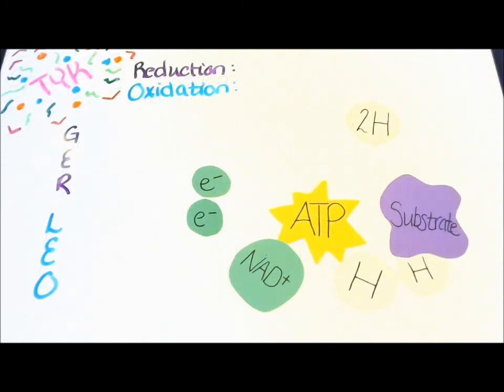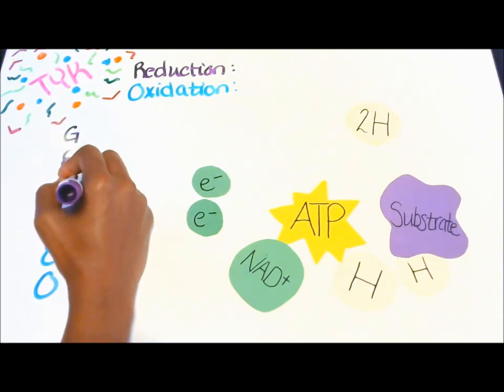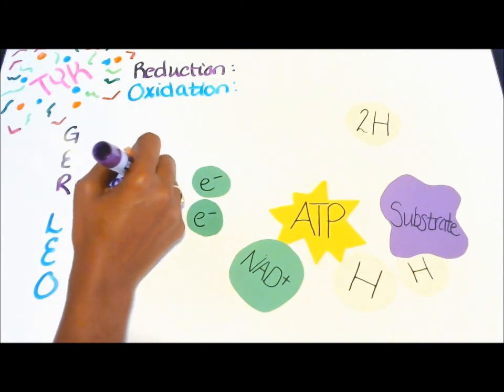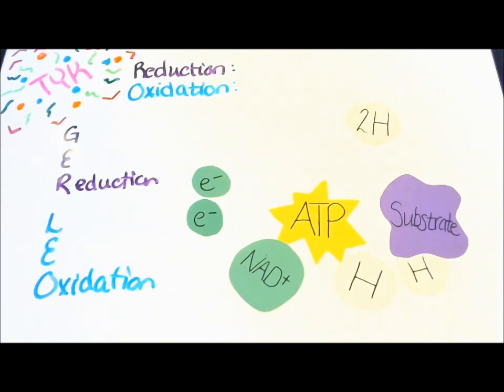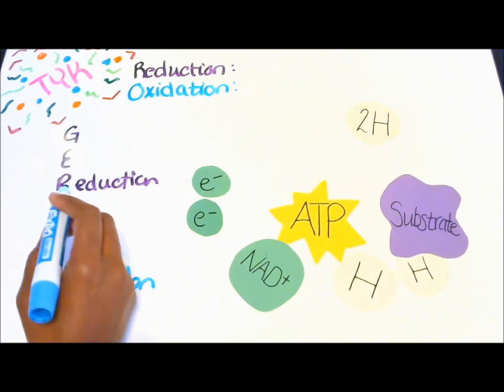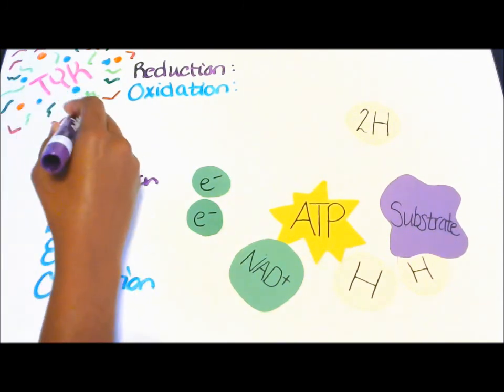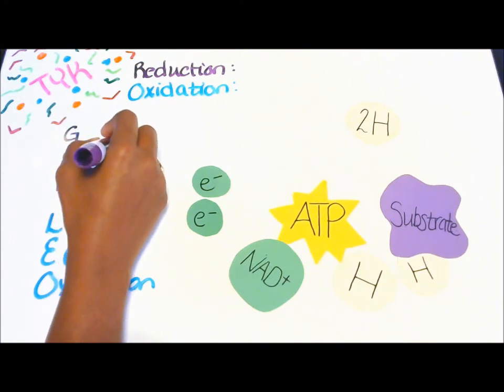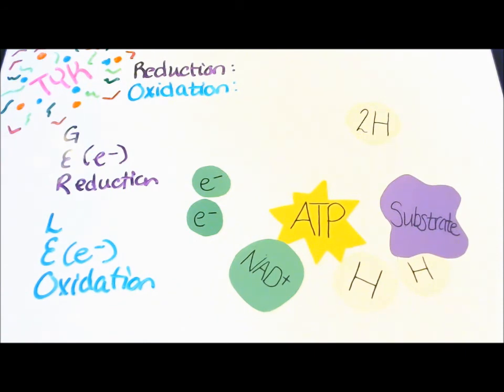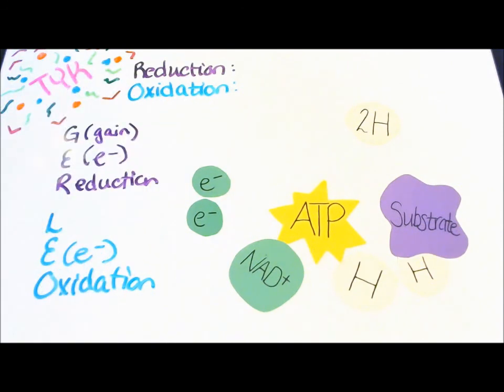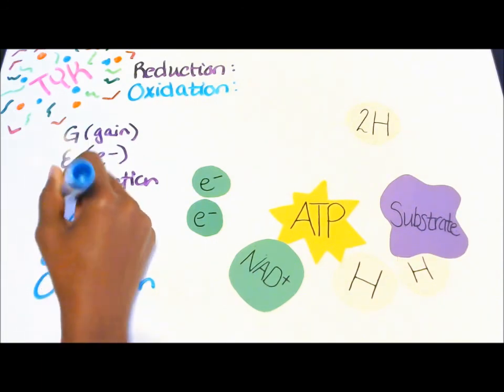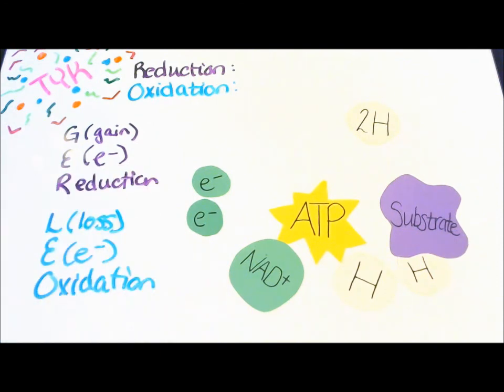Okay first things first, we're gonna start with GER, filling in the blanks. So we know of course this is reduction, so if that's reduction then this one is oxidation. We know that both of them deal with electrons. Now we have to know whether it's gain electrons or losing electrons. Since the L in LEO is helping us, in reduction there is a gain of electrons and with oxidation there is a loss of electrons.